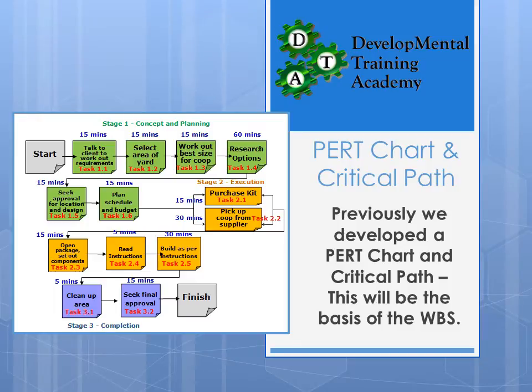Previously we looked at the PERT chart — Program or Project Evaluation Review Technique — and the Critical Path, which helps us develop a timeframe for our project. We're going to use that information, including the task numbers and timeframes, to develop our work breakdown structure.